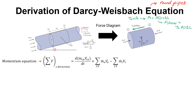The other force acting on this control volume is weight. Because our cylinder is angled, we have two components for weight. One component in the S direction would be W times sine of alpha, and the other component is W times cosine of alpha.